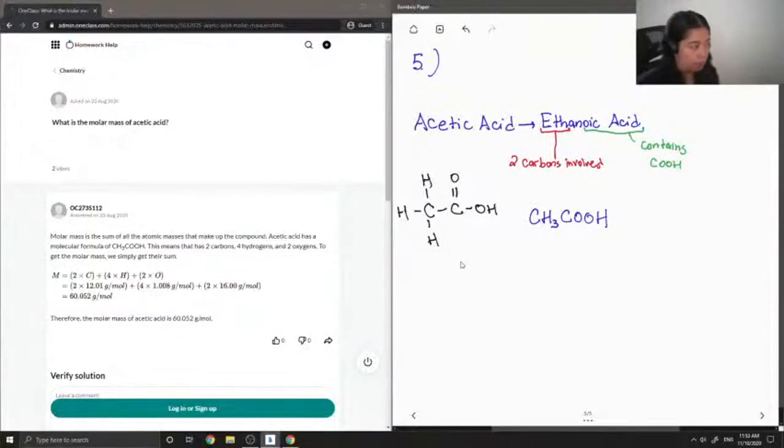The question asks for the molar mass. So first I'm going to write down all of the molar masses involved in acetic acid. For the molar mass of carbon, it is 12.01. The molar mass of oxygen is 16, and the molar mass of hydrogen is 1.01.